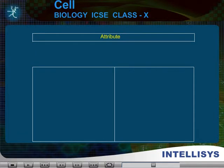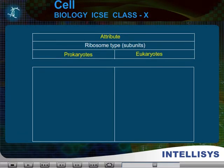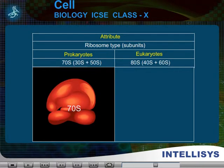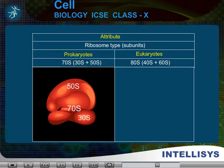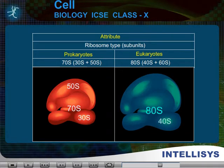Attribute: Ribosome type. In prokaryotes, it is 70S. The subunits are 30S plus 50S. In eukaryotes, it is 80S, and the subunits are 40S plus 60S.